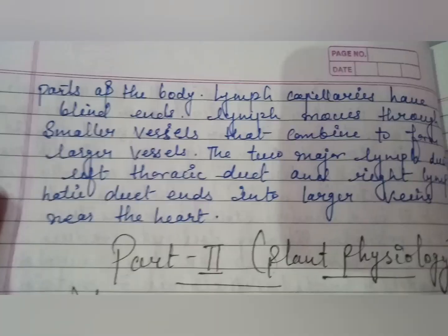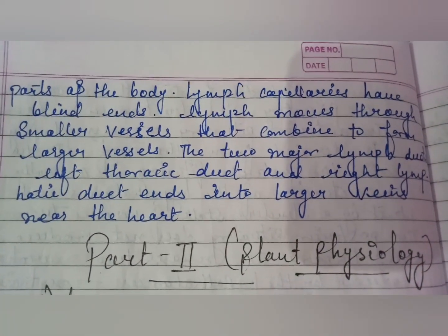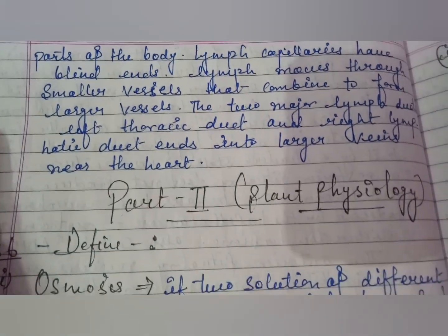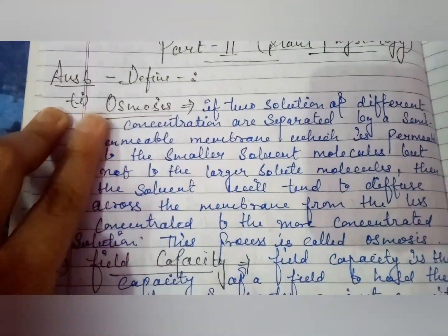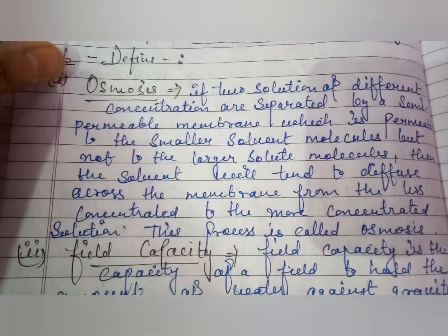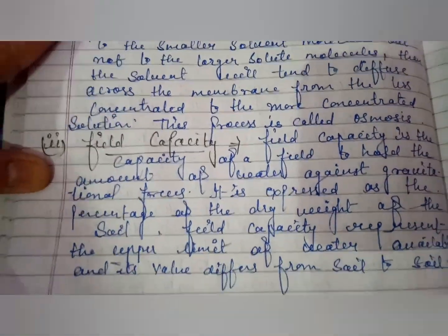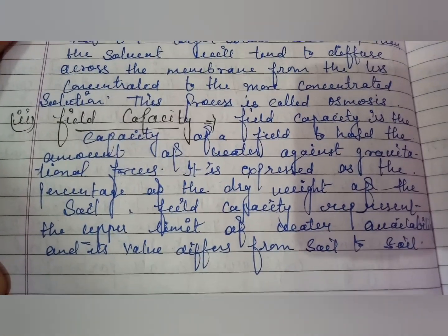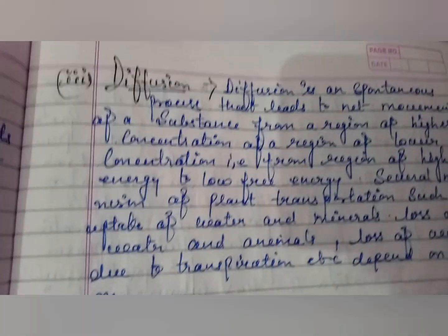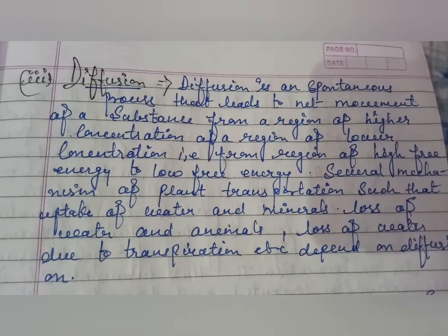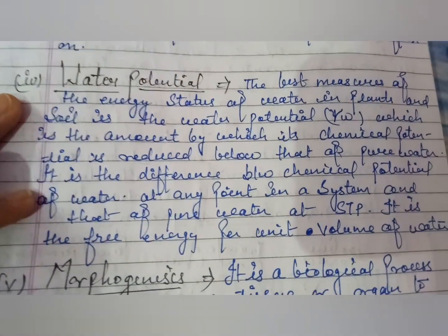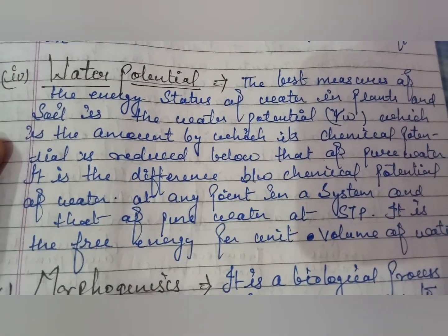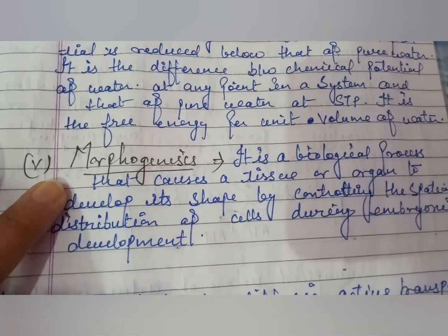Part Two is Plant Physiology. Answer six covers definitions including: osmosis, field capacity, diffusion, water potential, and morphogenesis.